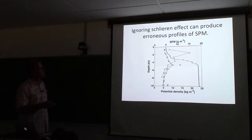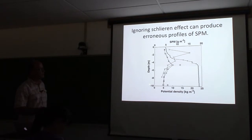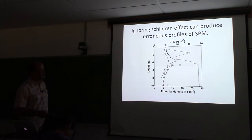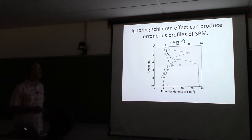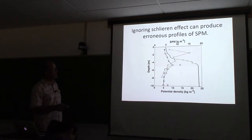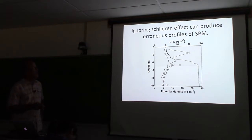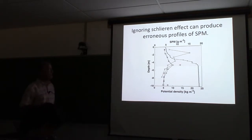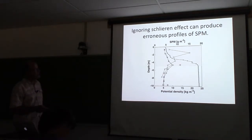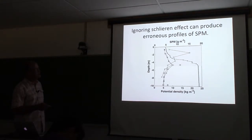Here's a depth profile from one of our profiles. The x-axis shows potential density on the dotted line. The top axis shows SPM in grams per meter cubed - those are the lines with open symbols - and the asterisks show direct filtration measurements of SPM. The AC9 and the backscatter sensor are shown here and they show the same thing: less sediment near the surface, increasing to roughly double at five meters, then falling back down.